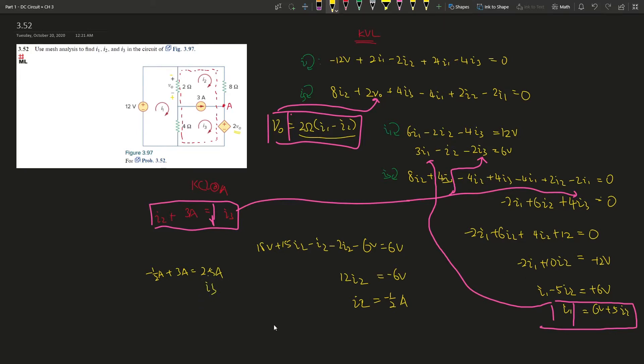And then i1, the relationship is over here, which is i1 equals 6V plus 5 times i2. So 5 times negative one-half, so minus 2.5, and that is going to give us 3.5 ampere, which is i1.